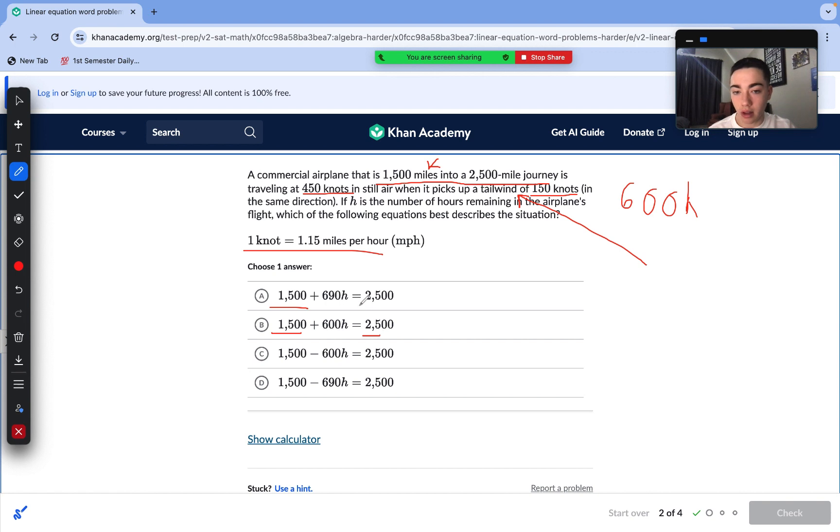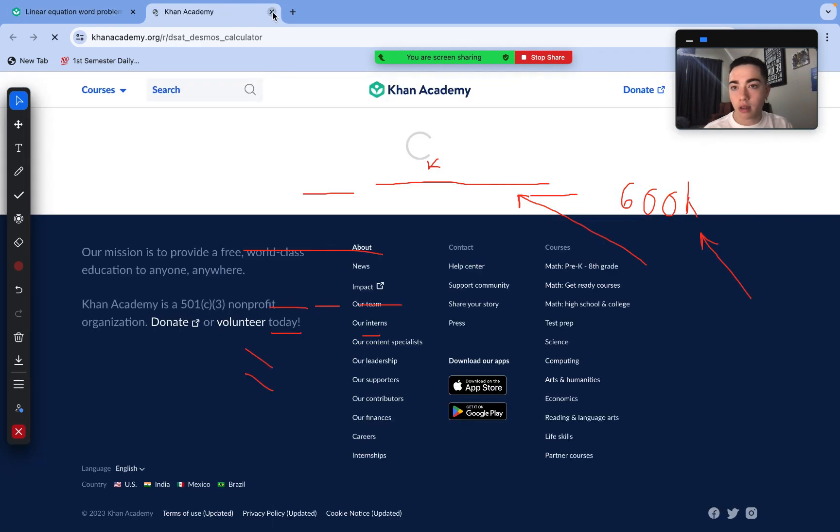It looks to be either A or B. Many students here are going to pick B because they just combined the knot values. Remember, we need to convert this before because if 1,500 is in miles, and so same with 2,500, we need to convert the 600 knot value into miles per hour. So, we would have to multiply 600 by 1.15, which is going to be a larger value than 600. 690 makes sense.